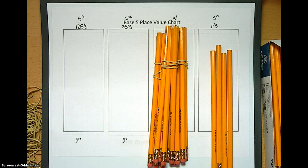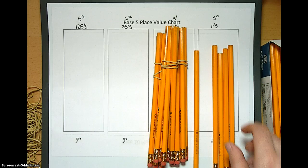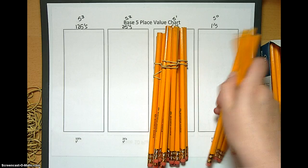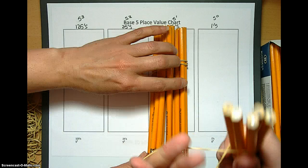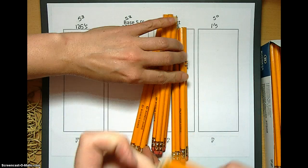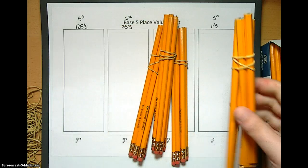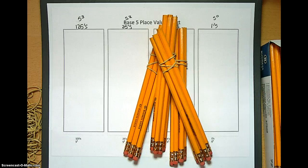And then once we get the fifth one there, again we bundle. So now we had 3 bundles of 5 and we're about to have 4 bundles of 5. So we're getting quite full over here, but we're at 4, 0.